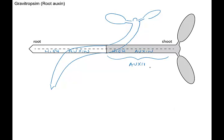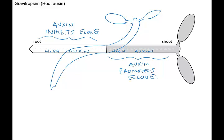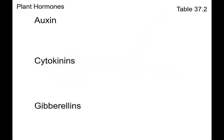So to summarize, in the shoot auxin promotes elongation. The more auxin you have, the faster it elongates. Whereas in the root, auxin has the opposite effect—it inhibits elongation. This is something you just have to get used to when thinking about plant hormones: the same hormone could have two different effects in two different cell types. In the shoot it promotes elongation, and in the root it inhibits elongation, but that produces the bending that we see when a plant reorients towards gravity.